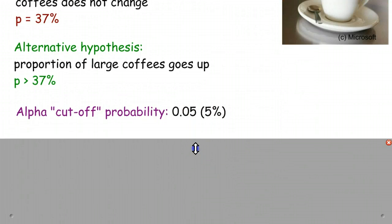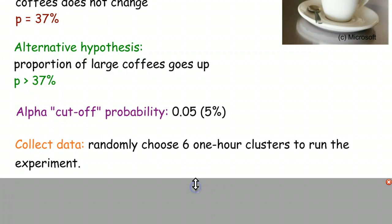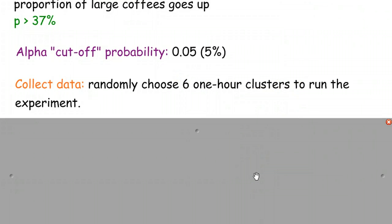The next step we need to do is go out and actually collect some data. In this case, I decided that we're going to randomly choose six one-hour clusters to run the experiment. We're going to find one-hour periods during the workday, and instead of saying what we normally say, we're going to say 'would you like a large' when we ask people what size they would like.